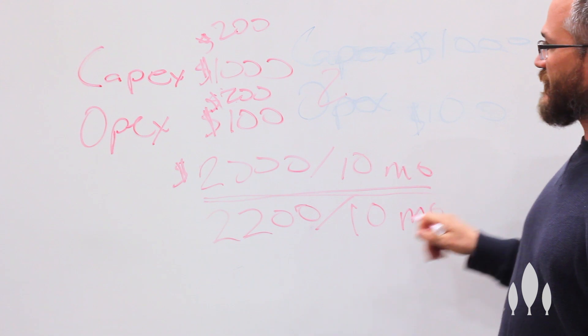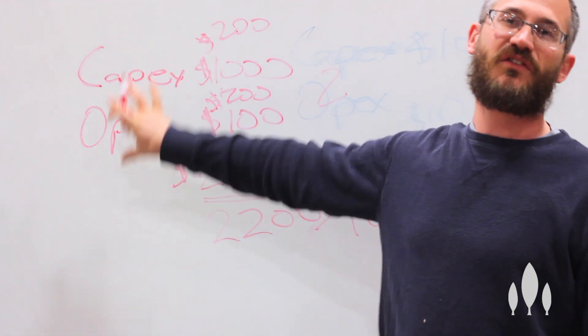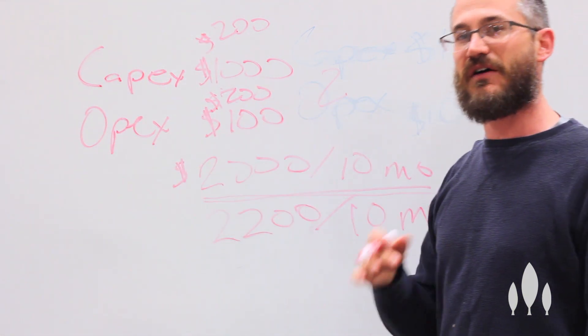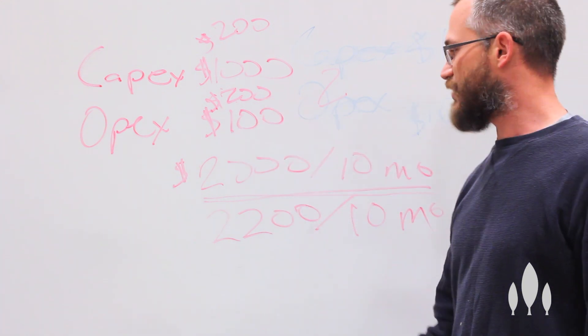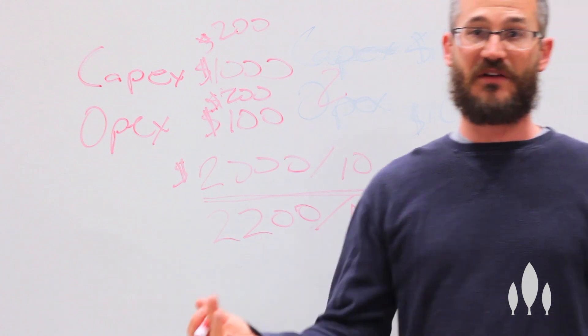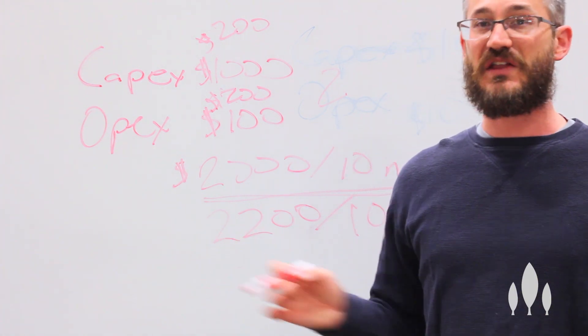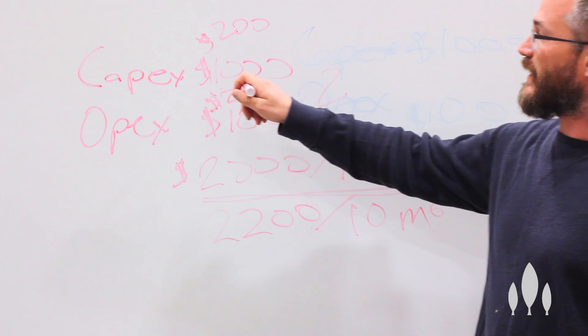So basically what we're seeing here, and this is exaggerated because it doesn't always work out this way, but just giving you an idea of how that changes. If we go with traditional HID after ten months we pay two hundred bucks extra.